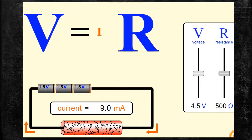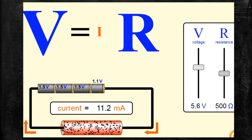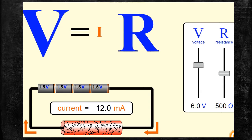Look at how the value of I changes when V is increased. Now it is increased from 4.5 volt to 6 volt. When V increases — when potential difference increases — the current value also increases.